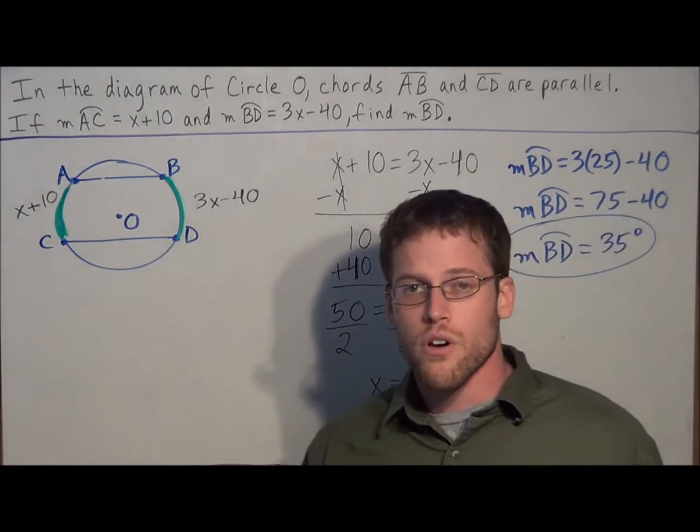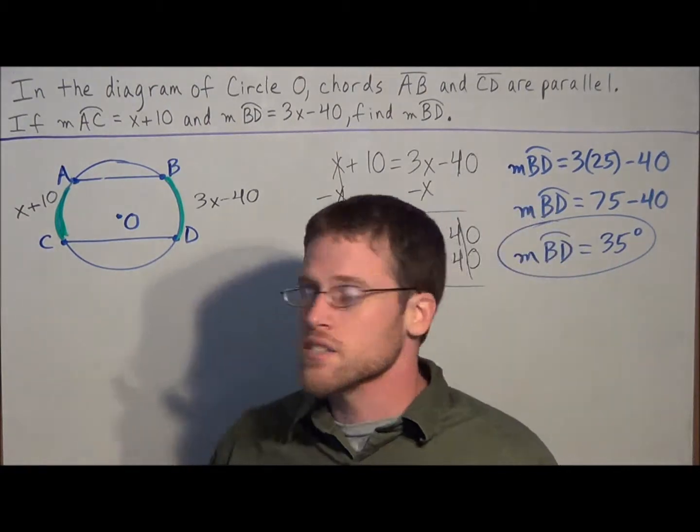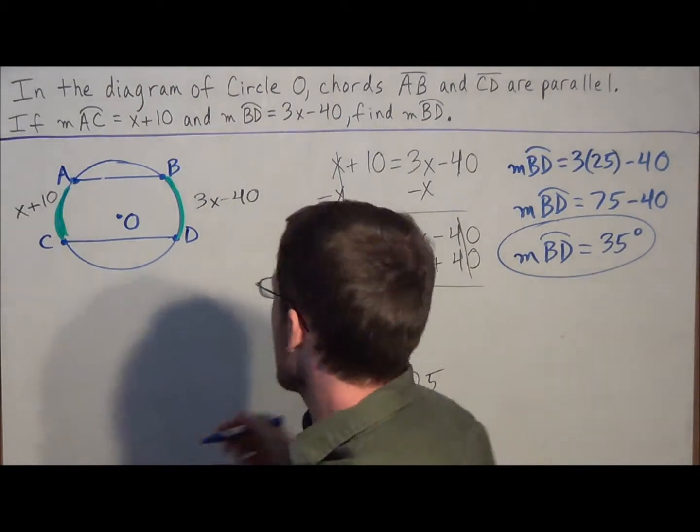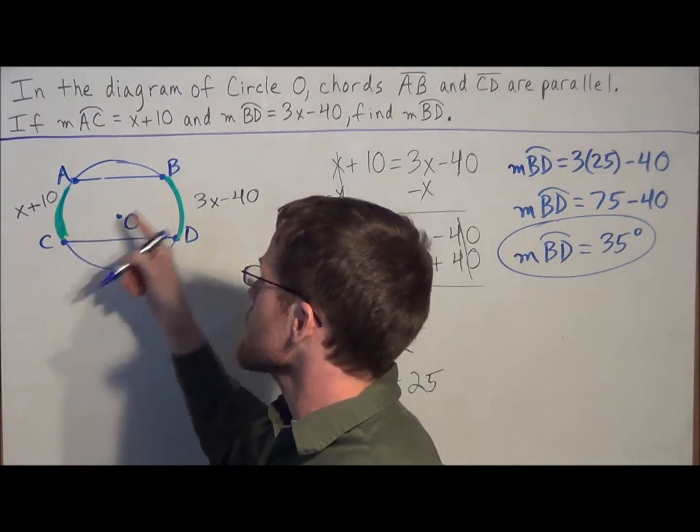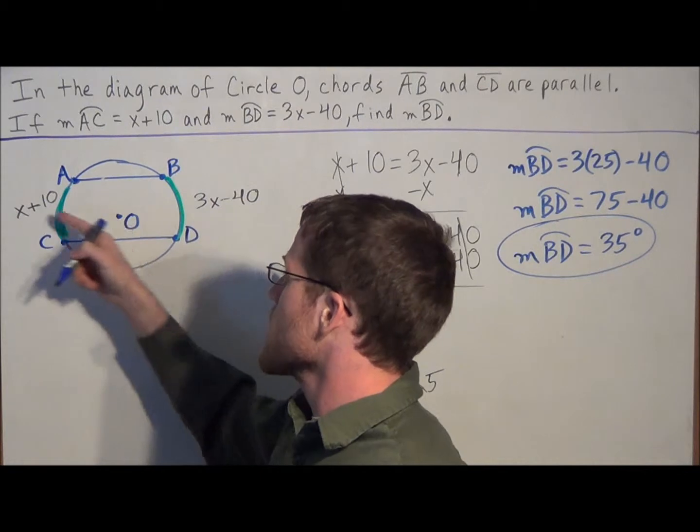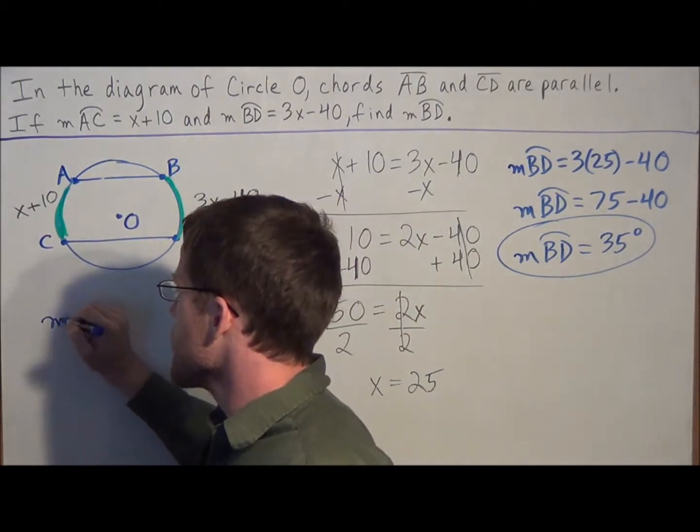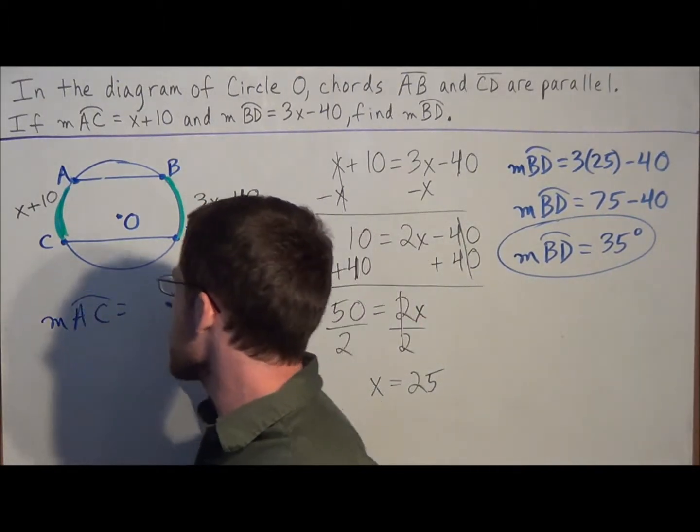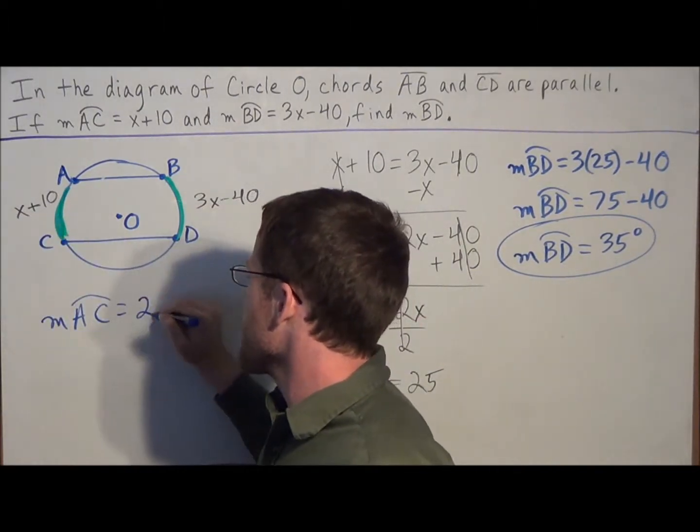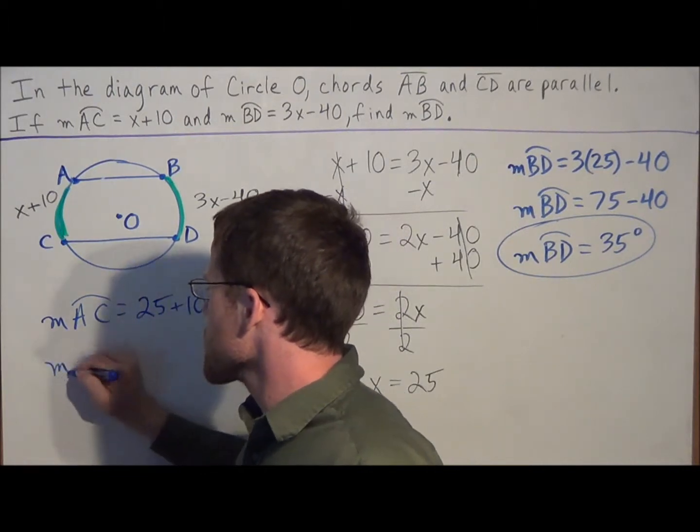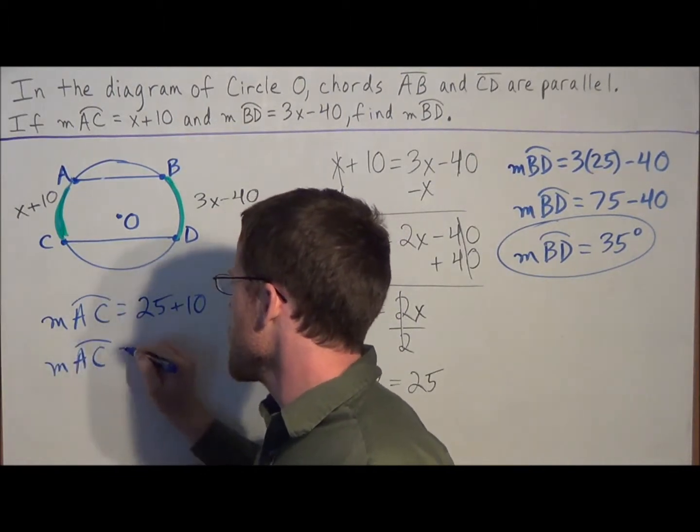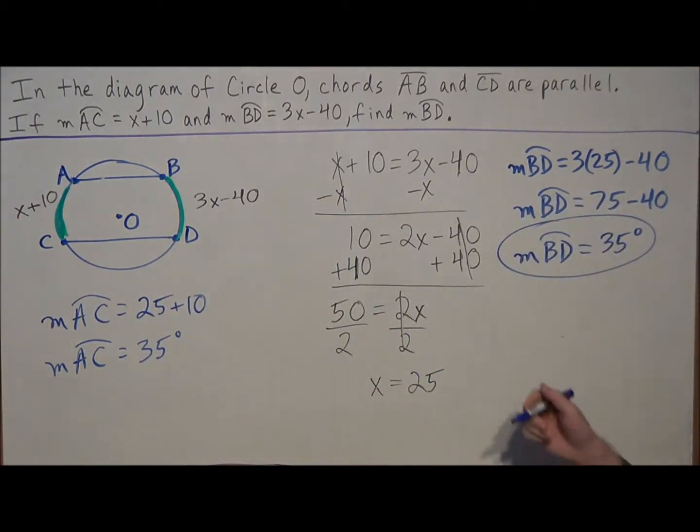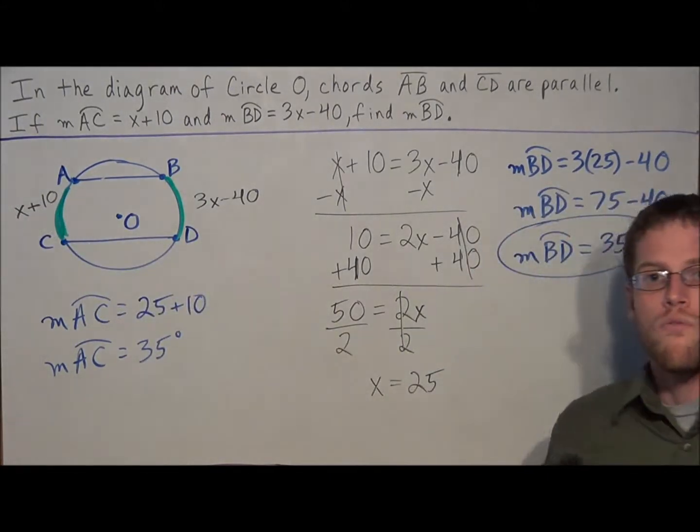One thing that you should do, though, before you identify your answer, is make sure that this x value satisfies the other arc as well. We said in the beginning that parallel chords will intercept congruent arcs. So we know that arc AC should also be equal to arc BD. So when we plug in x equals 25, we have 25 plus 10, which tells us that the measure of arc AC is equal to 35 degrees as well. So our answer definitely checks out because the arcs remain equal.